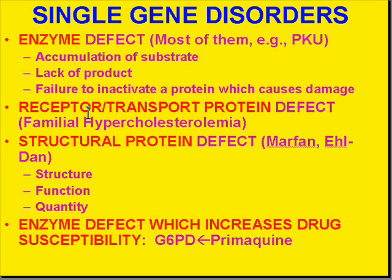In another scenario you may have an abnormal transport protein. In familial hypercholesterolemia, there is a defective transport protein, and therefore cholesterol can't be transported through the liver as it should be. As a result, it takes other routes, leading to extensive, premature atherosclerotic blood vessel damage.